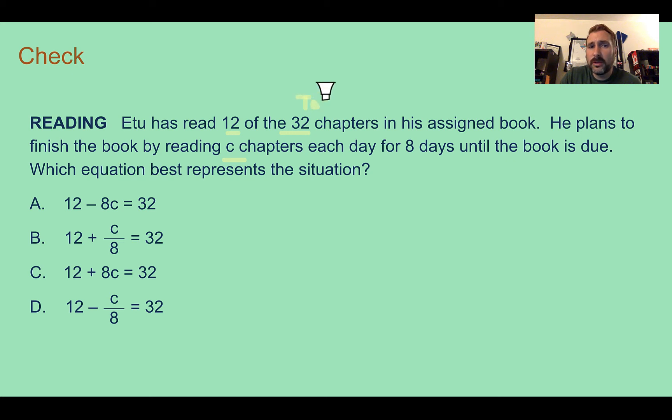What we do know is he has read 12 out of 32, so 32 is our total, and each chapter for 8 days, so he has 8 more days to read. So if we're looking through, our total is 32. All of them say 32.